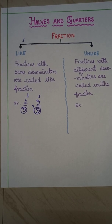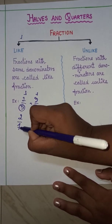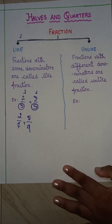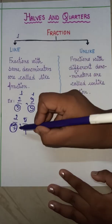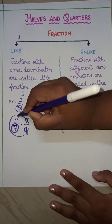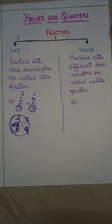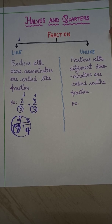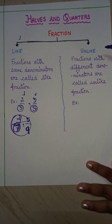Similarly, I'm writing another example: 2 by 7 and 5 by 9. Here you can see the denominators are different — here the denominator is 7 whereas here the denominator is 9. So these two fractions are not like fractions. To become like fractions, both the fractions should have the same denominator.